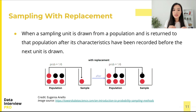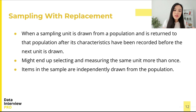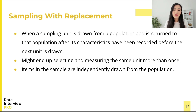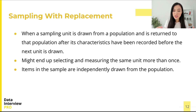So when we sample with replacement, we might end up selecting and measuring the same unit more than once. The items in the samples are independently drawn from the population, because one random draw is not affected by the previous draw.